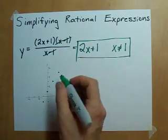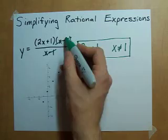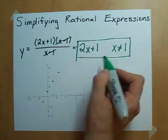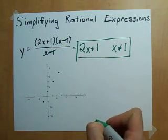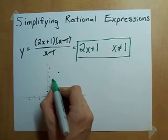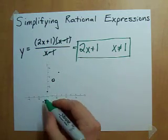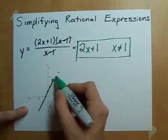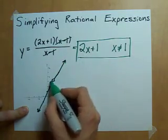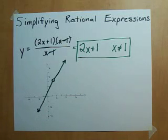The only difference between this function and the line 2x plus 1 is this restriction that x is not allowed to be 1. The way that manifests itself on the graph is with an open circle where x equals 1. But otherwise, this function is exactly the same as 2x plus 1, just with a little hole in the graph where x is plus 1.